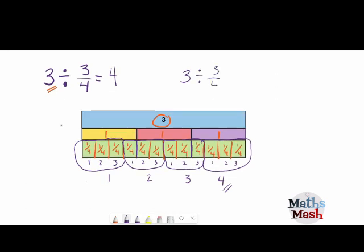Another way of doing it is 3 divided by 3 quarters. We can just multiply the 3 times the 4, gives us 12. And then we just divide that by 3. And that'll give us an answer of 4.